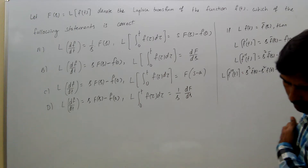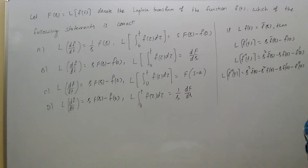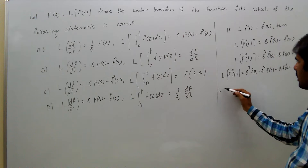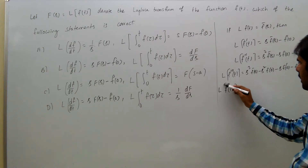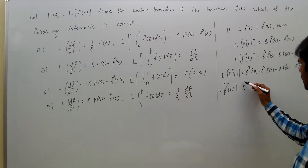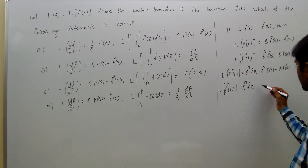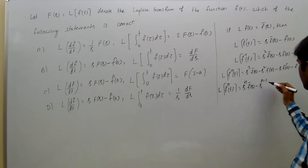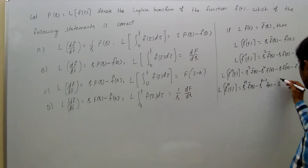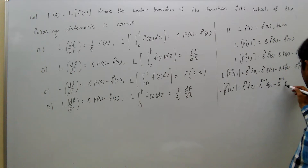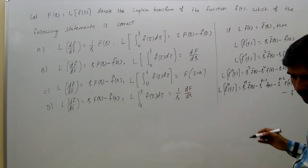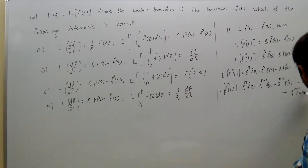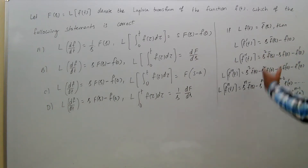Similarly, the general formula: Laplace transform of the nth derivative of F(t) equals S to the power n times F-bar(S) minus S to the power (n-1) times F(0) minus S to the power (n-2) times F'(0), continuing down to minus F of (n-1) of 0.